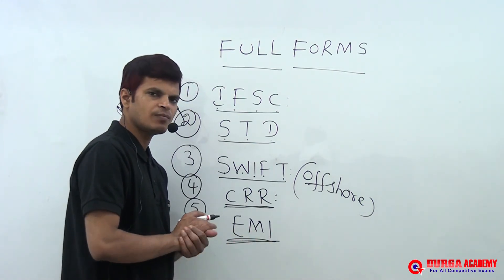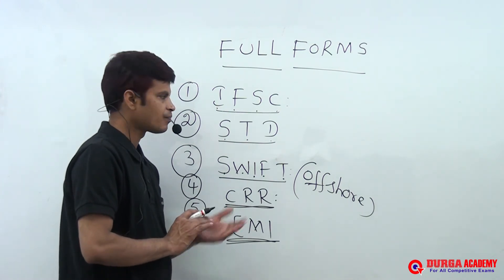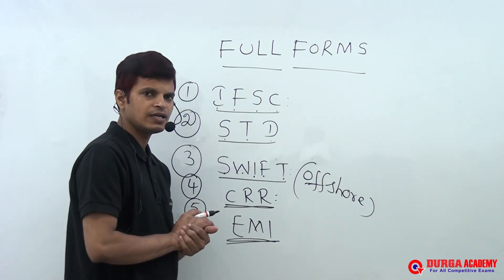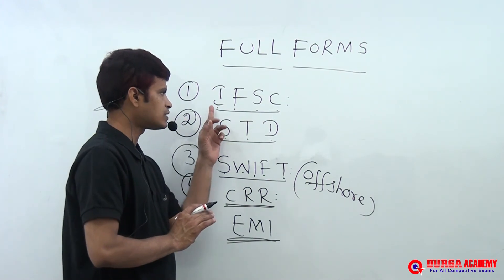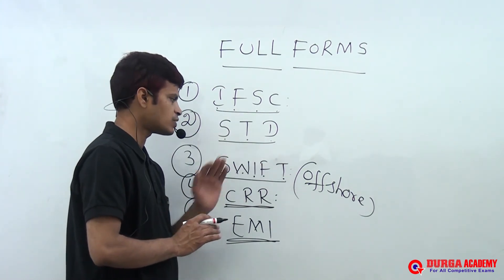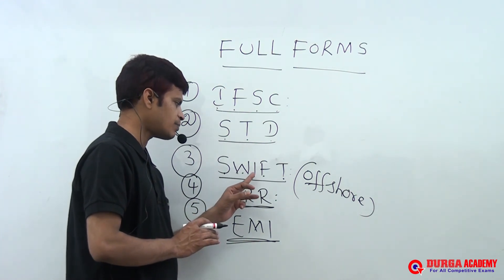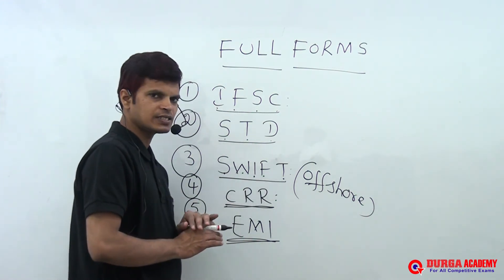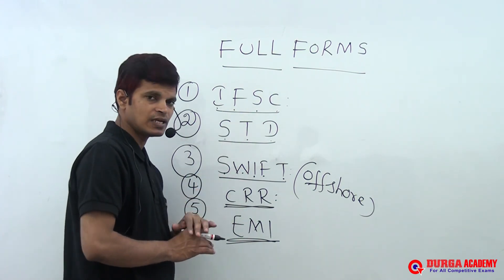These are very very very important. So IFSC - Indian Financial System Code, STD - Short Term Deposit, SWIFT - Society for Worldwide Interbank Financial Telecommunication, 16 digit. IFSC is 11 digit.